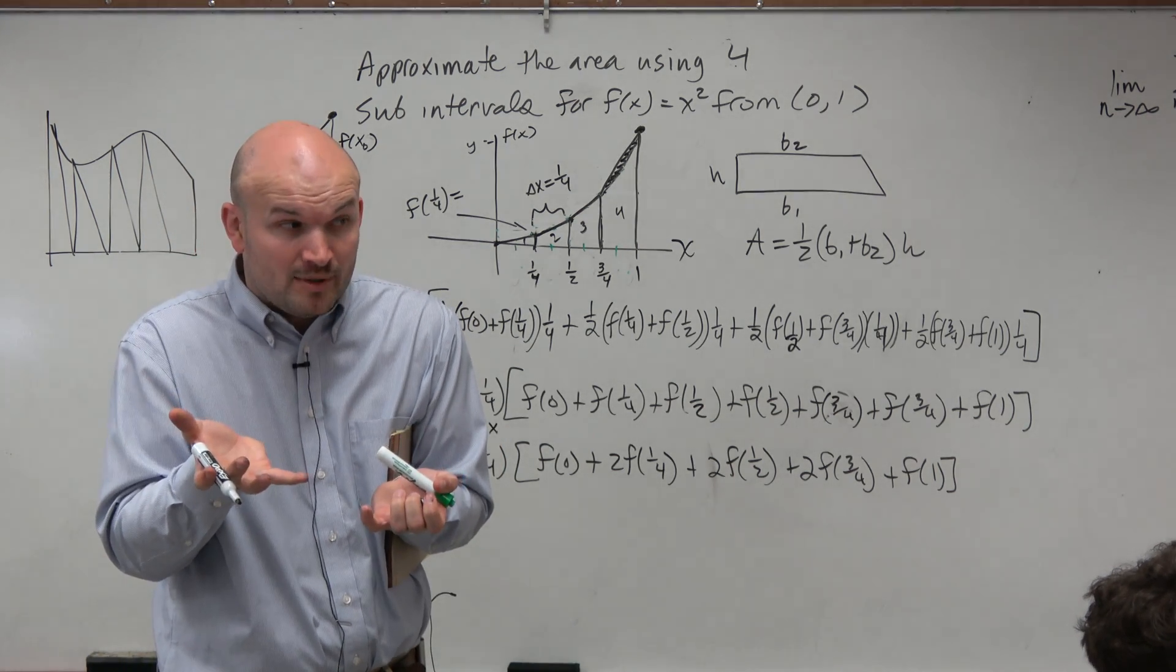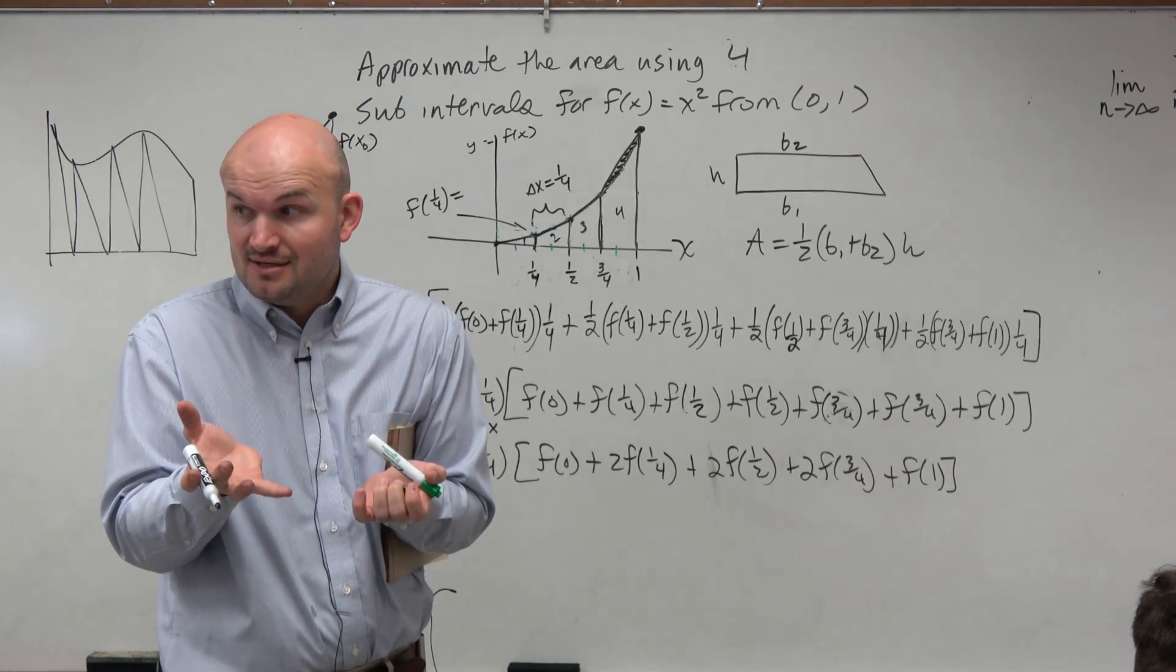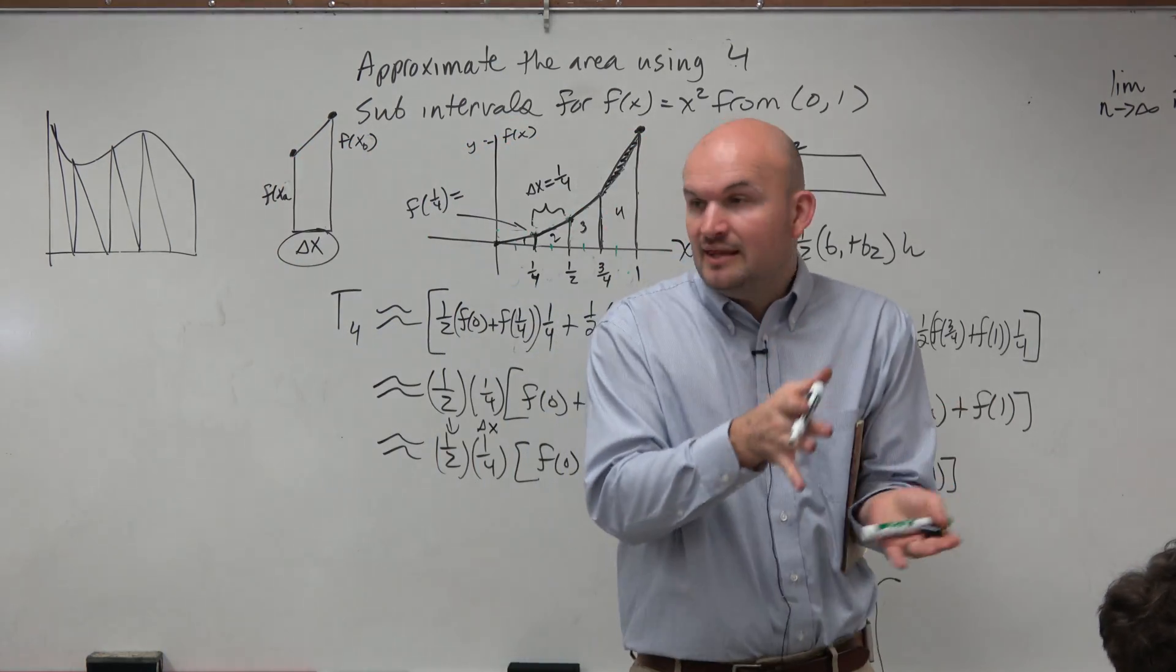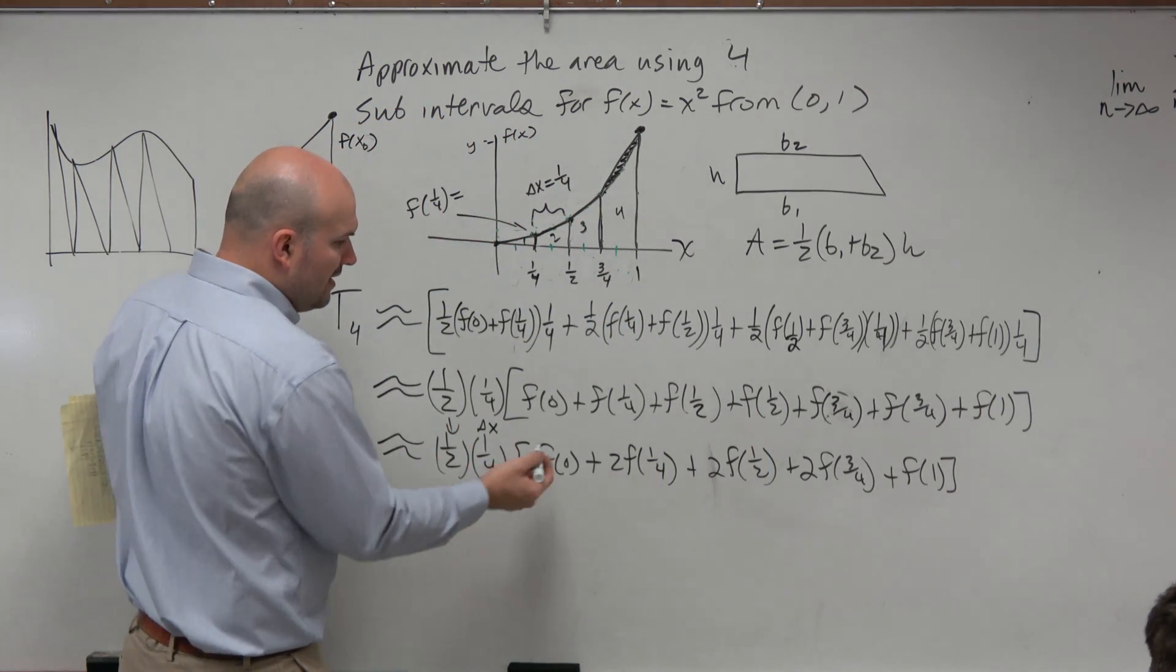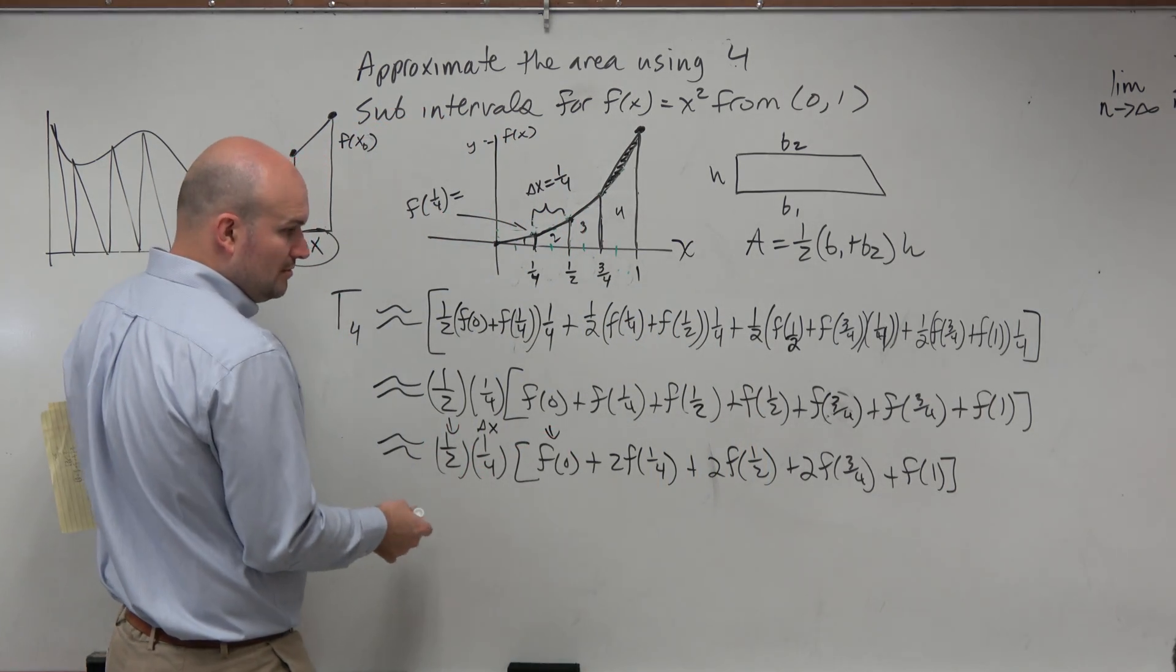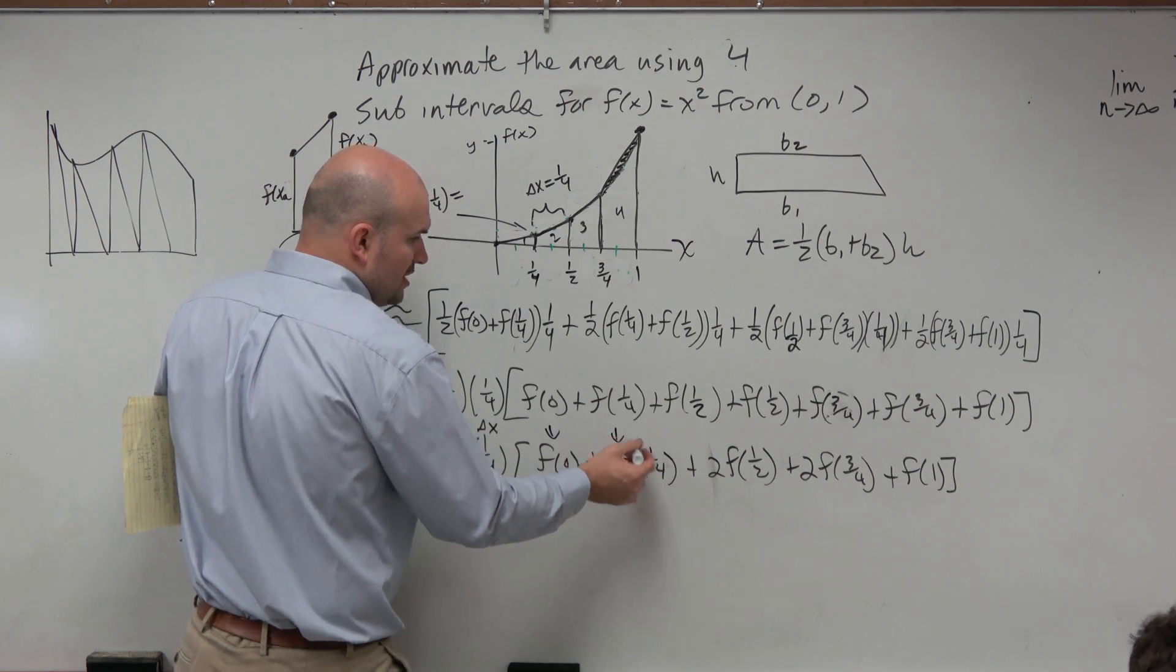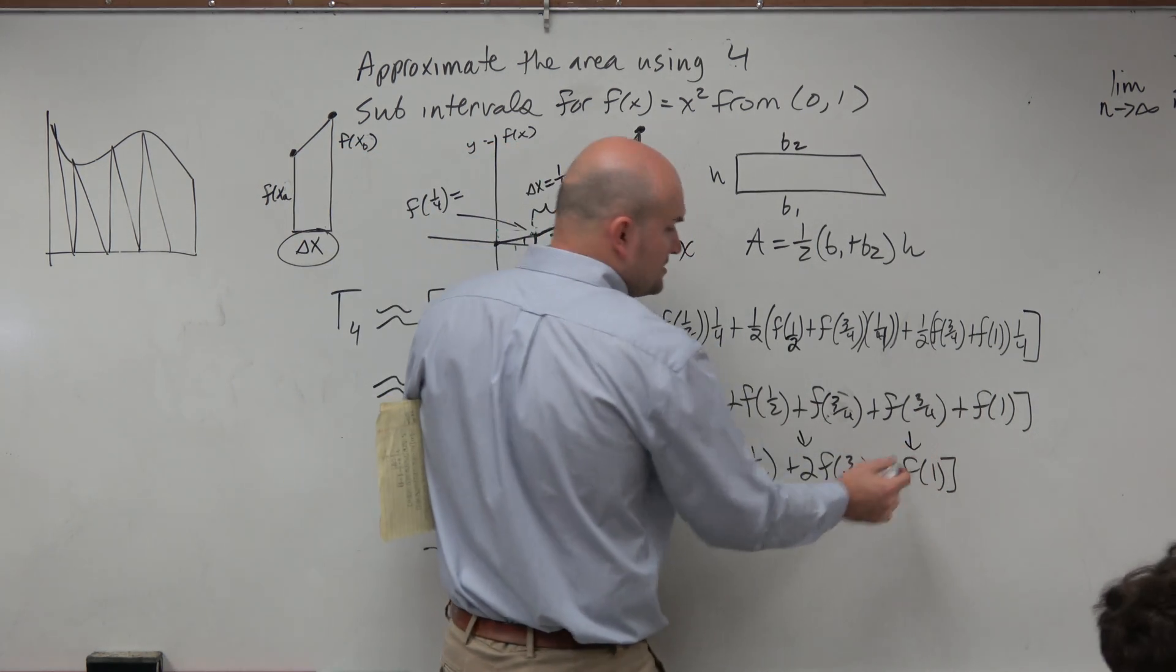But if you guys can understand, you always factor out the 1/2. You always factor out the delta x, as long as the delta x is uniform. If it's not uniform, you can't factor out the delta x. If the difference is like 1, and then 2, and then 5, or something like that, you can't factor that out. It has to be exactly the same. Then, the first term is always solo. The other middle terms are 2, 2, 2, and last term solo.